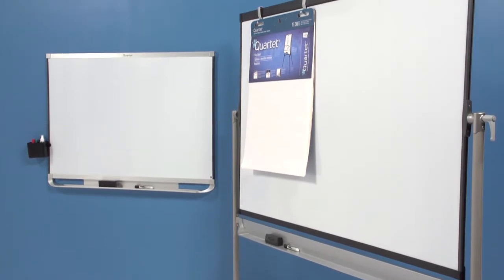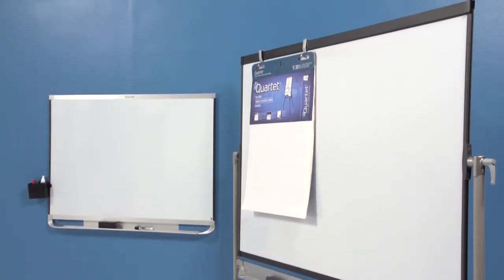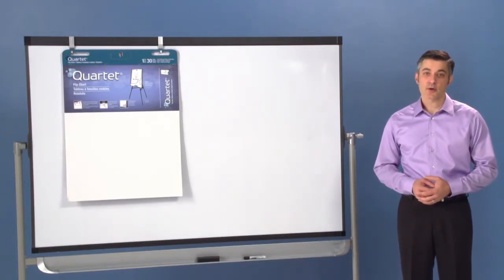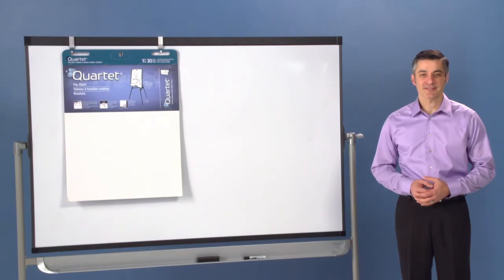This durable presentation easel matches Quartet Prestige II bulletin and whiteboards. The easel comes with a 15-year warranty. Order your Quartet Prestige mobile presentation easel today.